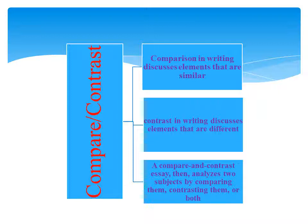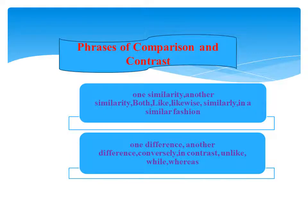You may organize compare and contrast essays in one of two ways: according to the subjects themselves, discussing one and then the other; or according to individual points, discussing each subject in relation to each point. Useful transition words for compare and contrast essays include: like, likewise, similarly, in a similar fashion, difference, another difference, conversely, in contrast, unlike, while, and various.